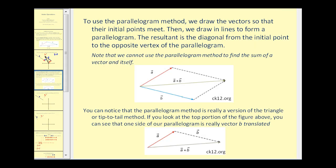To use the parallelogram method, we draw the vectors so that their initial points meet. Then we draw in lines to form a parallelogram, and the resultant is the diagonal from the initial point to the opposite vertex of the parallelogram. Here's vector A plus vector B — notice they share the same initial point. The dashed vectors construct the parallelogram, and the diagonal is the resultant, or the sum of those two vectors. You can notice the parallelogram method is really a version of the triangular, or tip-to-tail, method.